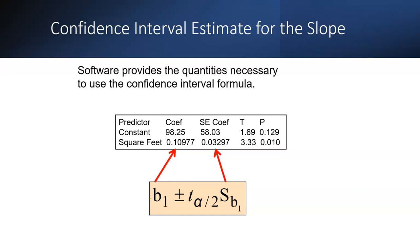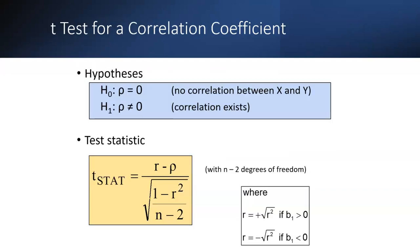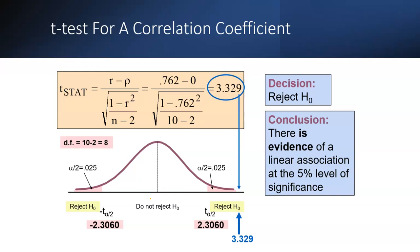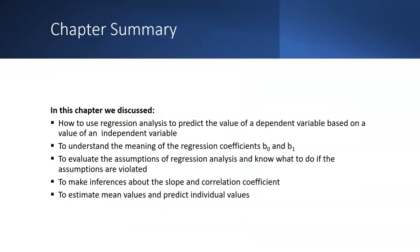Software provides the quantified values needed to use the confidence interval easily. Applying the t-test tells us whether there is evidence of a linear relationship between square feet and house price at a 0.05 level of significance. For example, if the t-statistic is 3.32 and it falls in the rejection region, there is evidence of a linear relationship at the five percent level of significance, so we reject H0.